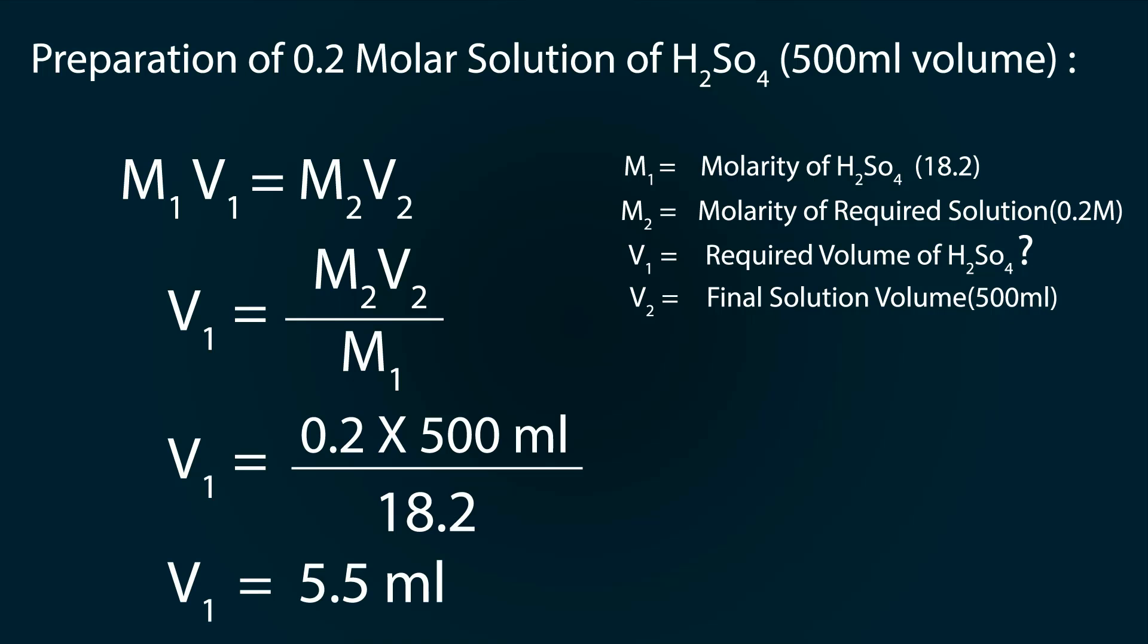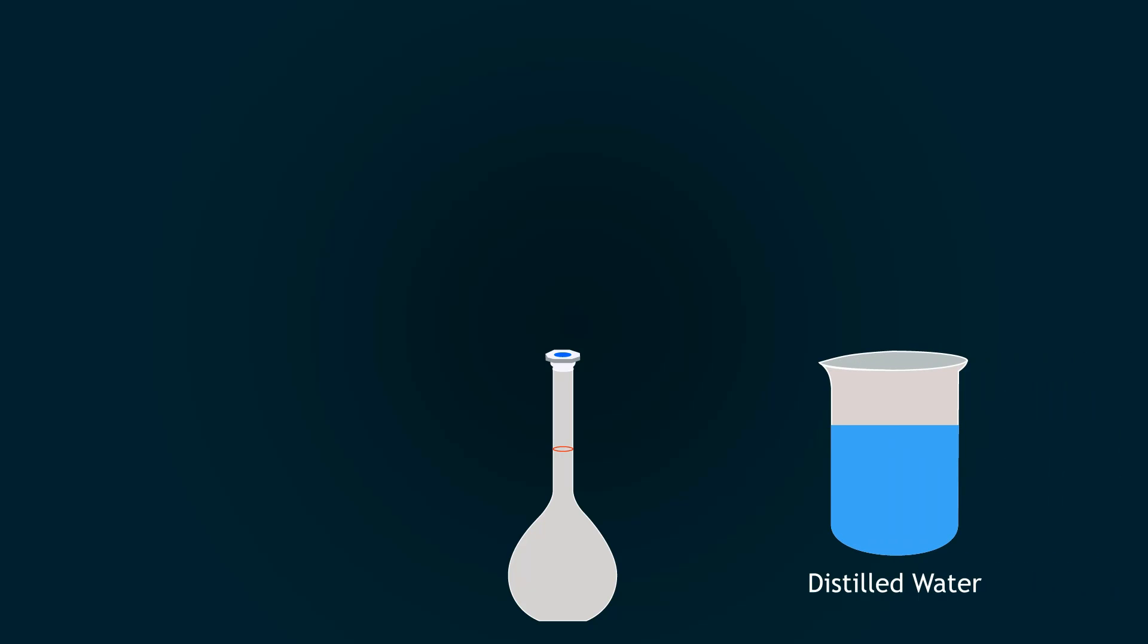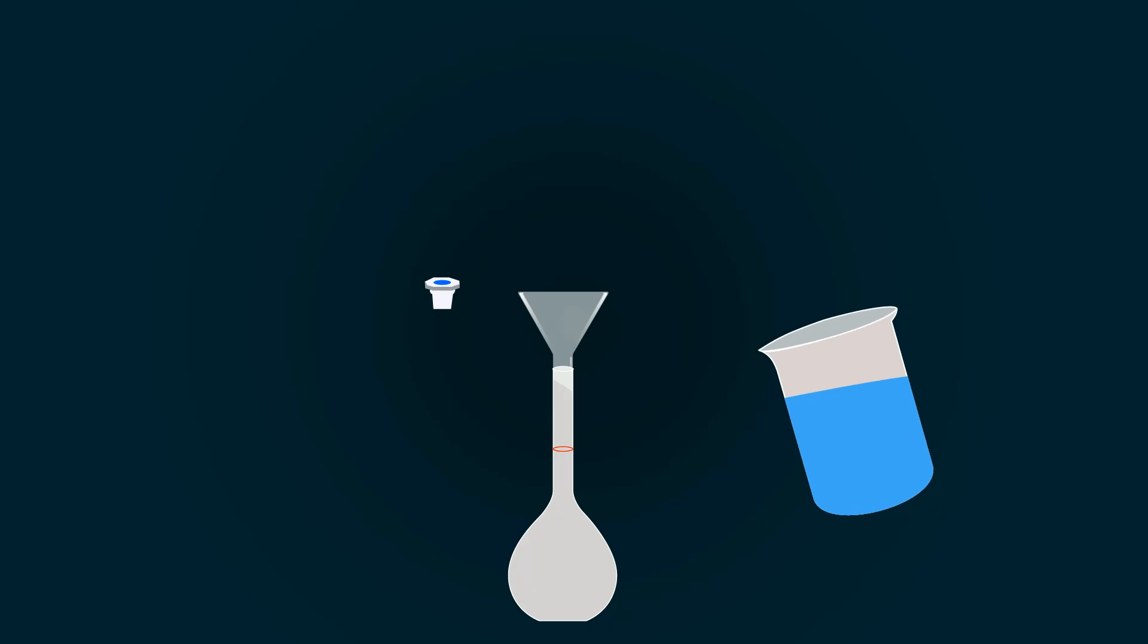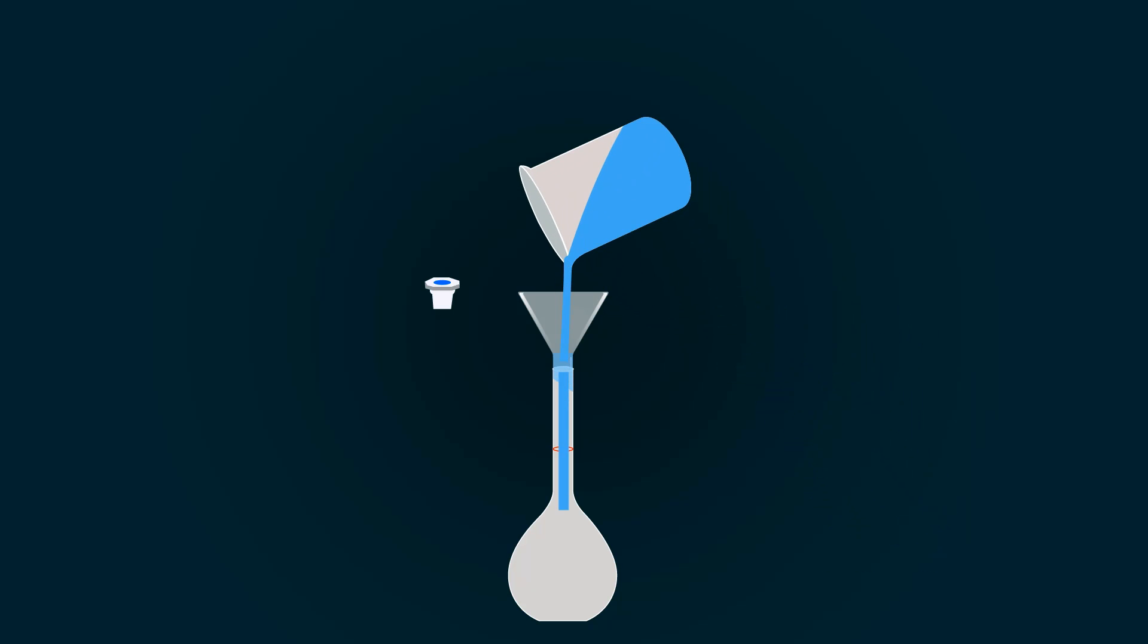Now let's start our preparation. Take a volumetric flask and add some distilled water into it. Please do not add sulfuric acid directly into the measuring flask because it may harm you or the flask.